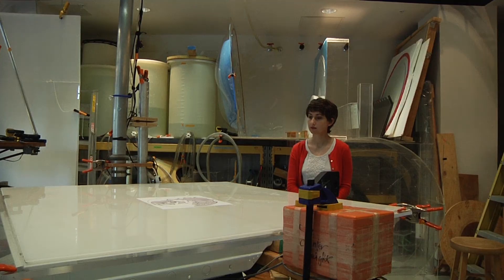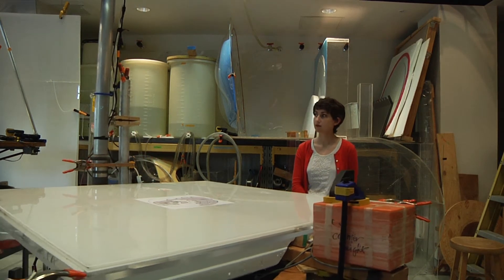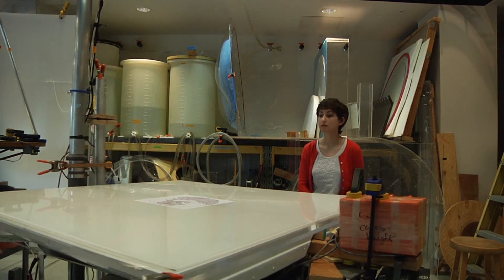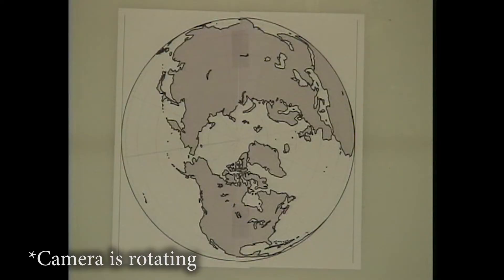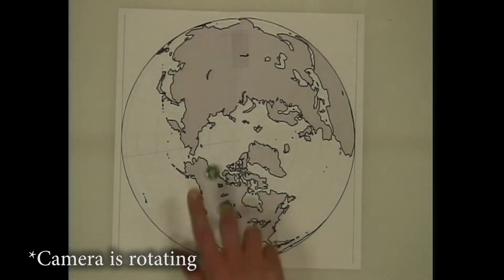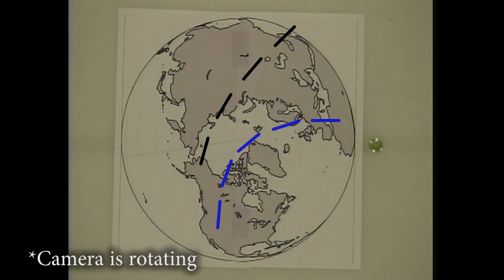We can test this with a turntable and two marbles. Imagine that this turntable is the Earth, and we're looking down on it with the North Pole in the center. If we roll one marble fast and the other slow, the Coriolis effect has had more time to act on the slow marble because the slow marble is on the table longer.